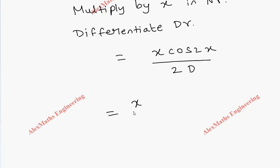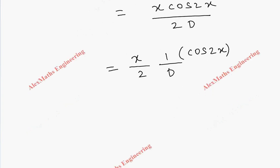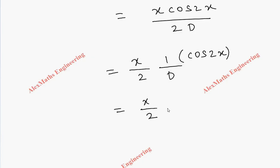Now x by 2 and it is 1 by D of cos 2x. 1 by D stands for integration. So integration of cos 2x is nothing but sin 2x by 2. Totally, x sin 2x by 4.